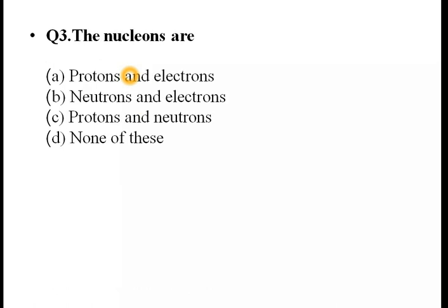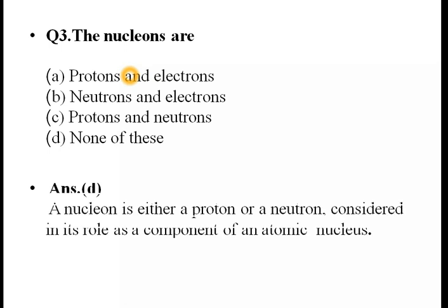Next question: Nucleons. What is the name for nucleons? Nucleons are protons and neutrons. Protons are positively charged and neutrons are neutrally charged — they have no charge. So the answer is none of the given options for charge type.